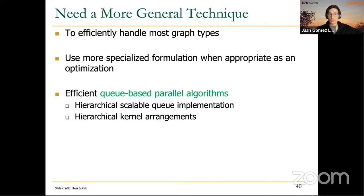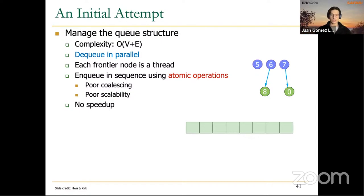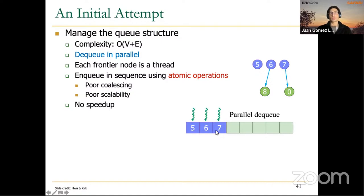We will start with a queue-based formulation of the BFS algorithm. In an initial attempt, we have a frontier at the beginning of every iteration — these are the nodes we have to visit and check for their neighbors. We assign one thread to each node in the frontier, performing a parallel dequeue. For example, for node 0 there are no neighbors; for node 6 there is one neighbor, node 8; for node 7 there is one neighbor, node 0.